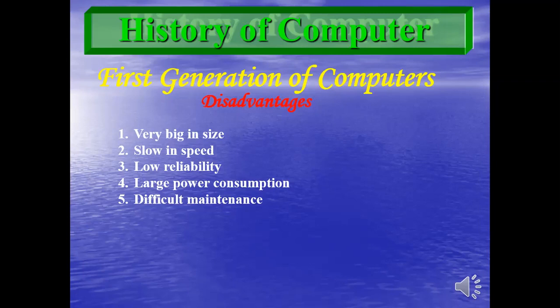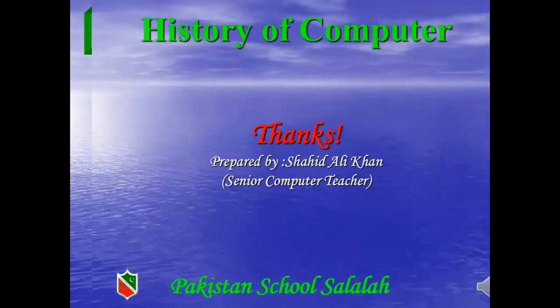Number four: large power consumption — vacuum tubes used a lot of electricity. Number five: maintenance was very difficult because of the large size and the thousands of vacuum tubes used. Whenever an error occurred, finding the faulty tube required weeks or sometimes months.